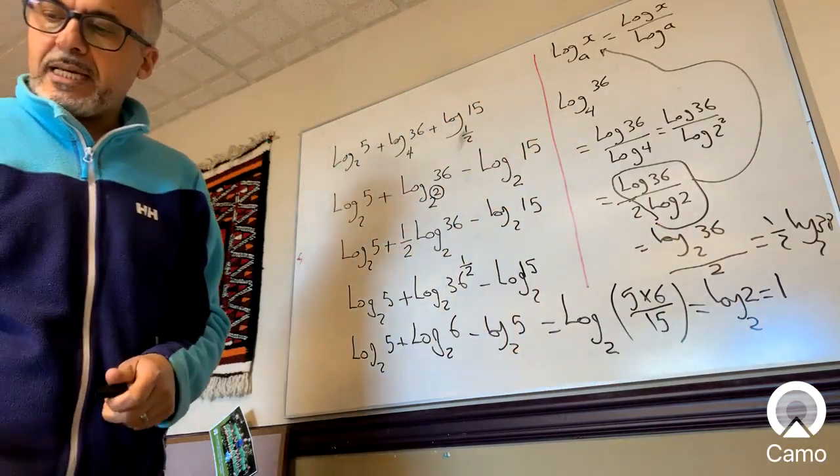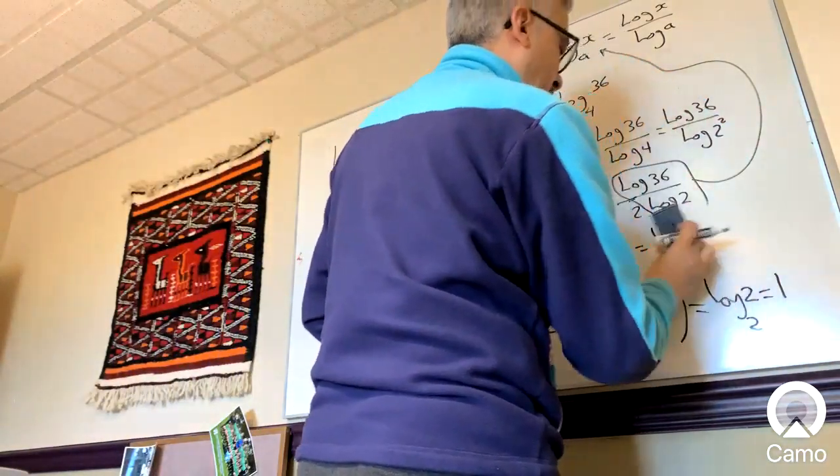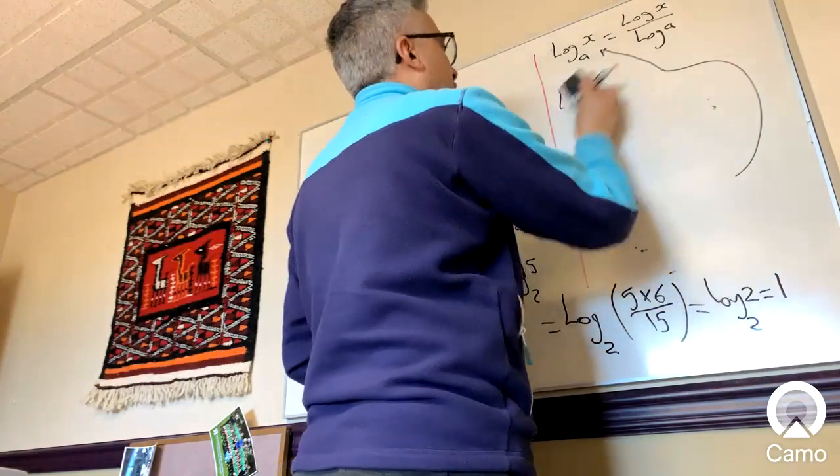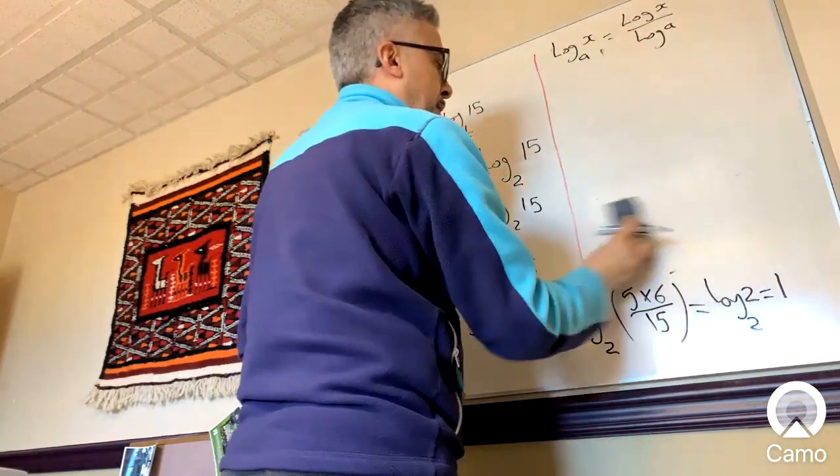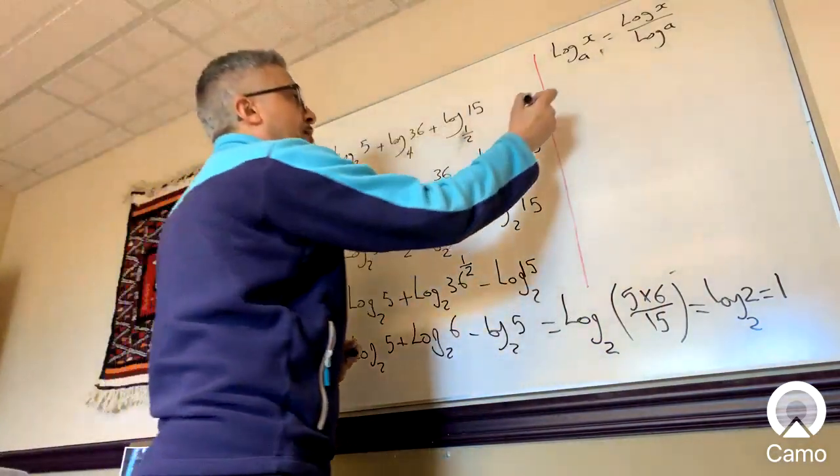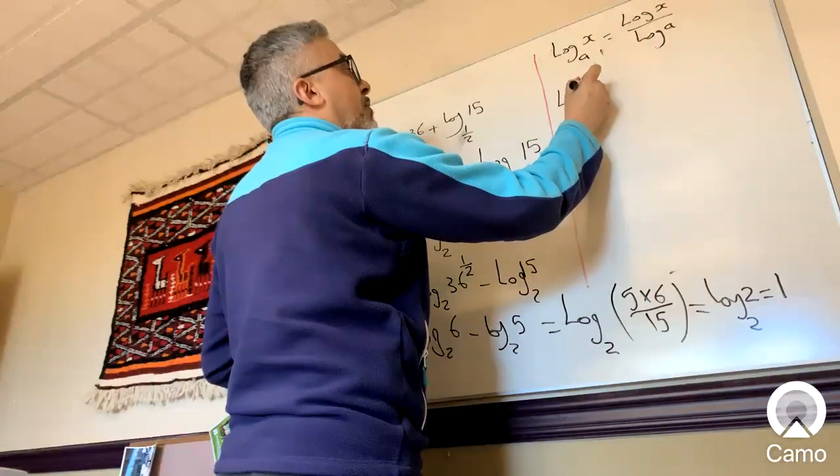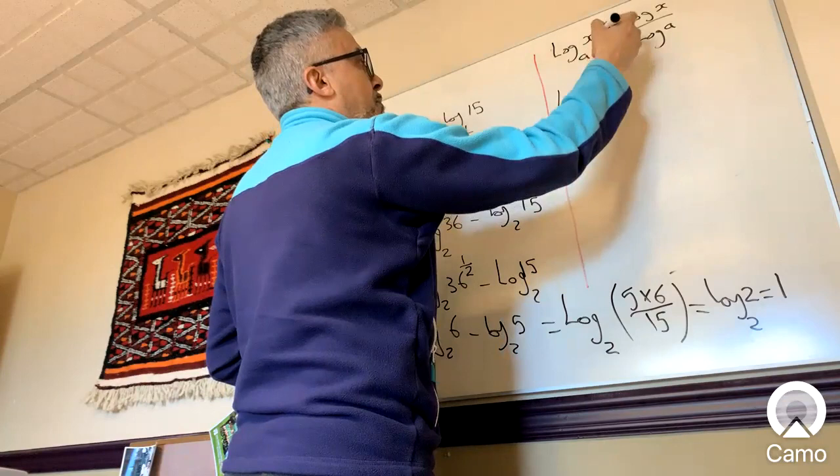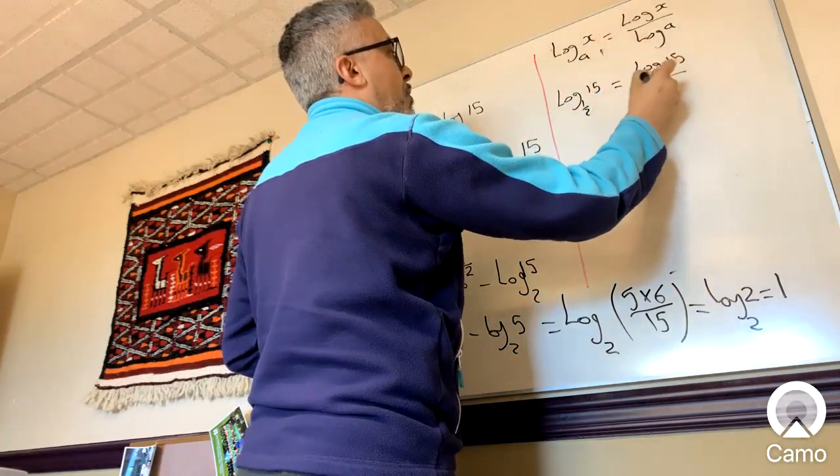Okay, how about the second part of this? Can I erase this? It's the same kind of thing. Now, this here log 15, log base 1/2 of 15, I'm going to change the base again, so this becomes log 15 over log 1/2.